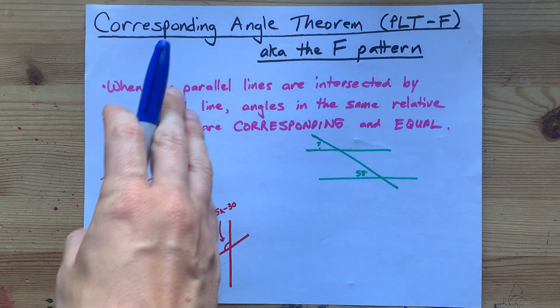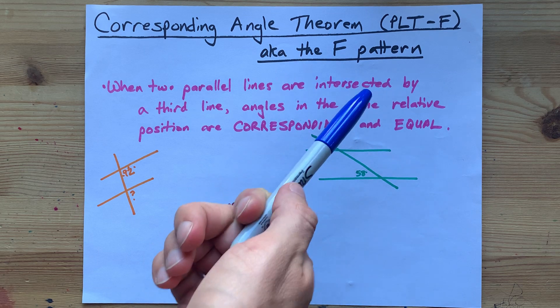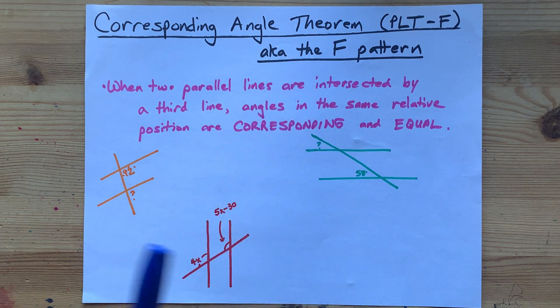The corresponding angle theorem is more often known as the F pattern due to the shape that's made with the parallel lines.